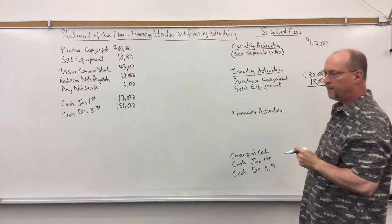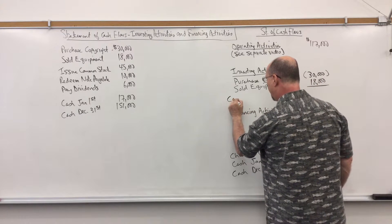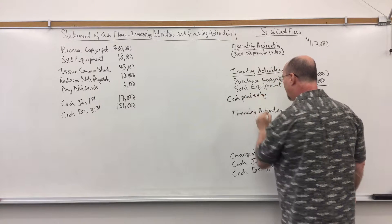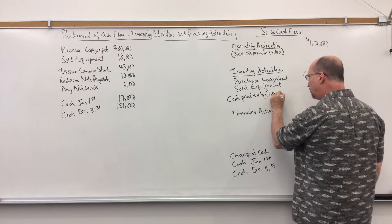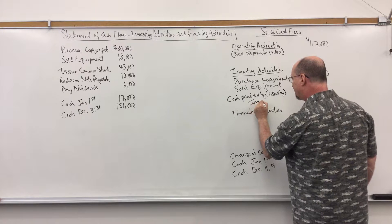If those are my only two investing activities then I'm simply going to put cash provided by if it's a positive number. If it was a negative number I put cash used by and I'm going to put this here investing activities.